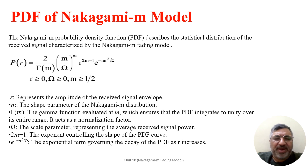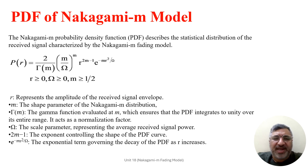The exponential term E to the power of minus M times R-squared divided by omega governs the decay of the PDF as R increases. It reflects the probabilistic behavior where the probability of observing higher signal amplitude decreases exponentially with increasing amplitude. In the next slides, we will discuss M and omega in a little more detail.